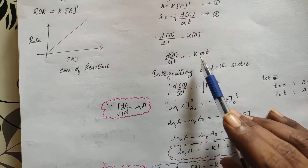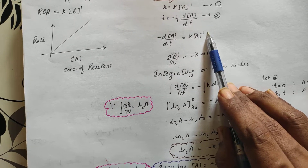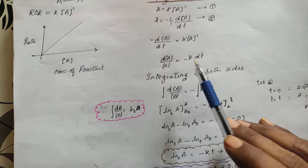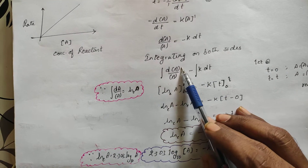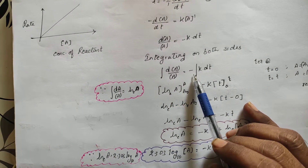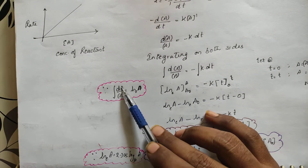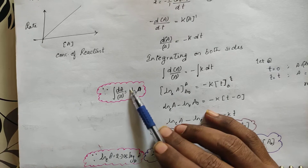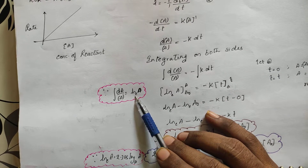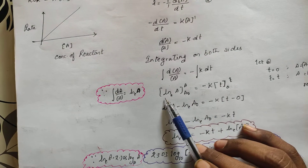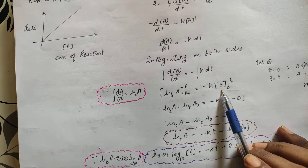On integrating both sides: if you bring concentration of A to one side and dt to the other side, you get dA/A = −K·dt. On integrating, the integration of dA/A equals ln[A], so ln[A] = −K·t plus a constant.